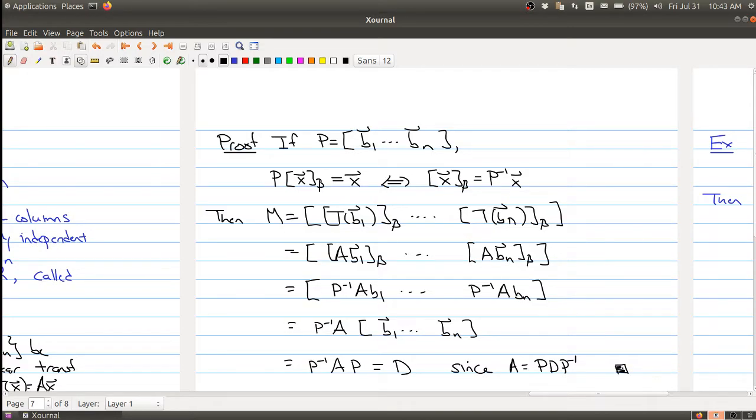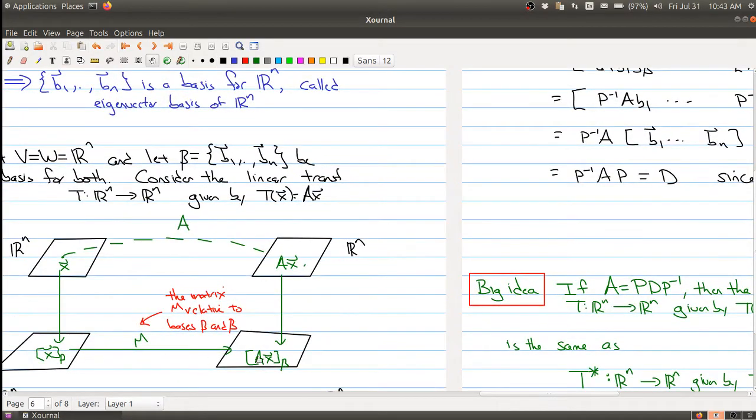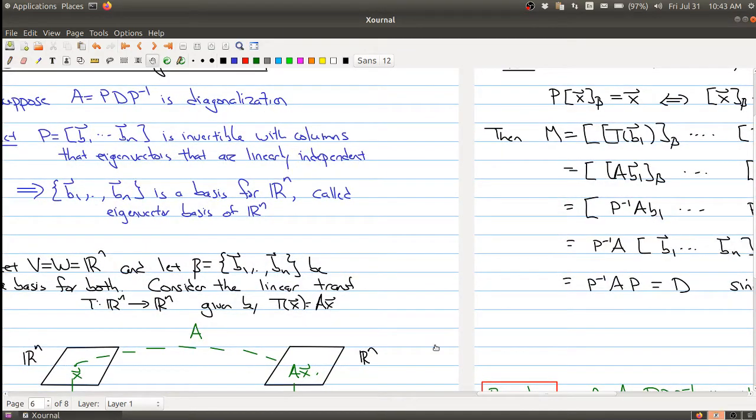So the matrix M at this level that exists because of our earlier work is actually the diagonal matrix that's showing up in the factorization in terms of the diagonalization.